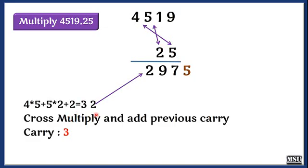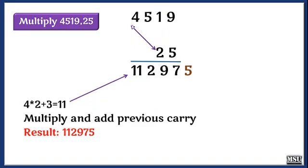Then we are going to multiply the leftmost bit, 4 into 2. The result is 8 plus 3, the previous carry 11. The result is 112975.